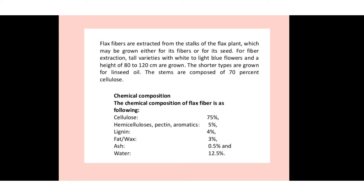There are two varieties grown: a tall variety with white to light blue flowers and a height of 80 to 120 centimeters, grown for linen fiber, and a shorter variety grown for linseed oil. The sorted short variety is used for linseed oil, while the tall variety is used for fiber extraction.